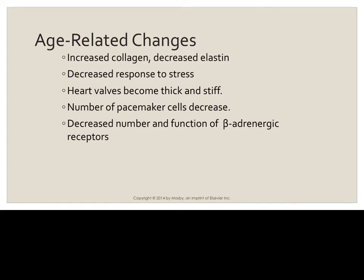On page 691 there is Table 32-1, going over some of the things that happen as we age, such as increased collagen and decreased elastin, which leads to a decrease in cardiac reserve. This means older people do not respond as easily to changes in blood pressure, heart rate, and stress, which can lead to heart failure. The heart valves become thick and stiff, which can lead to the onset of new murmurs.